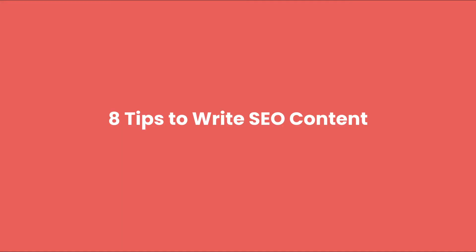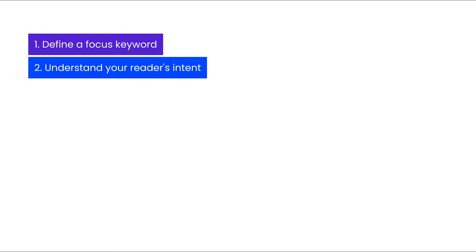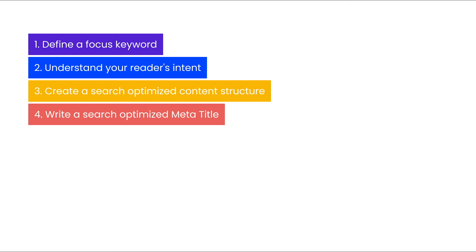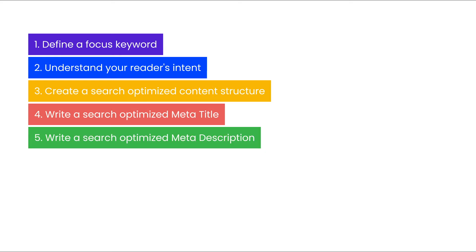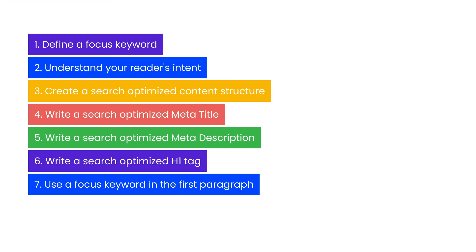There you have it — 8 tips to write SEO content: 1. Define a focus keyword. 2. Understand your reader's intent. 3. Create a search-optimized content structure. 4. Write a search-optimized meta title. 5. Write a search-optimized meta description. 6. Write a search-optimized H1 tag. 7. Use a focus keyword in the first paragraph. 8. Include internal links. Always strive to write and publish amazing content that addresses your reader's needs and solves their problems.